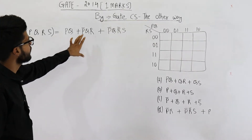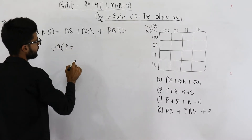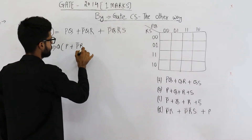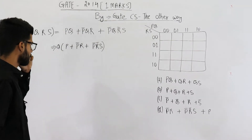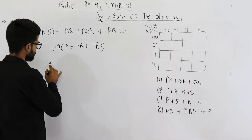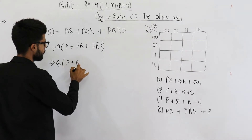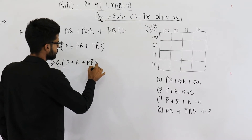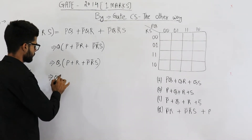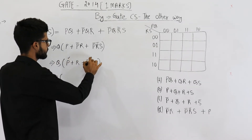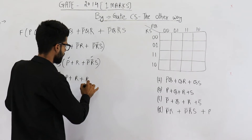For that, let's take Q common from all these three terms. So I have taken Q common — the first term will be P, then you will be left with P-bar R, and then P-bar R-bar S. Now you can see the absorption law is applicable here: Q into (x + x-bar·y) will be reduced to x + y. Absorption law is actually applicable twice here.